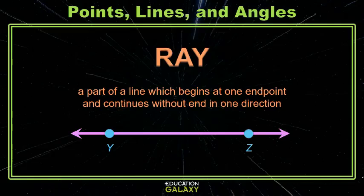If you're talking about one endpoint and the other end going on and on and on in one direction, that's called a ray. We identify it by its endpoint and the direction it's headed. In this case you see ray YZ.